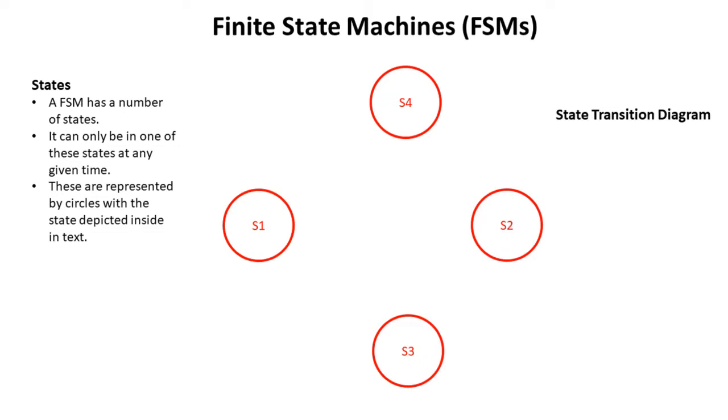We're going to work through what a typical finite state diagram would look like for a finite state machine. First of all, there are a number of states. The finite state machine can only ever be in one state at a time and these are represented by circles with text as depicted here.